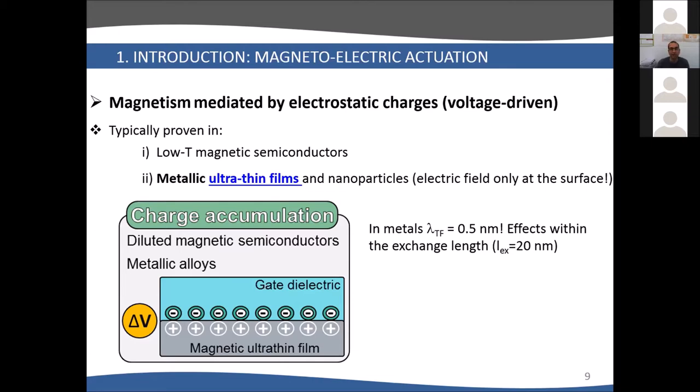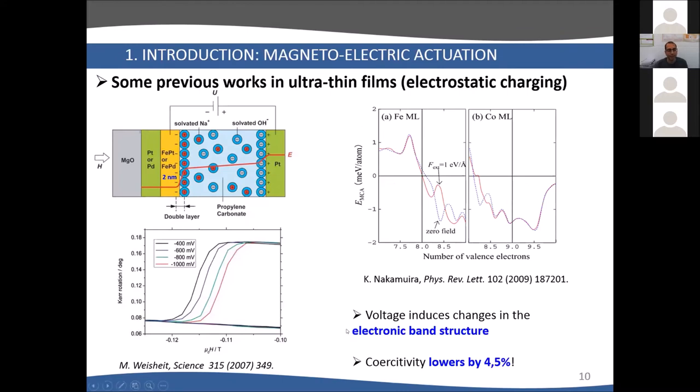You need to work in very thin metallic layers. This was done in the seminal work by Professor Givort in 2007, in which they immersed a very thin layer of iron platinum or iron palladium in propylene carbonate with solvated ions in solution. By applying voltage, they could change the coercivity. Here you see part of the loop zoomed around the coercivity. The change seems very large, but it was only 4.5 percent, a very limited effect. The explanation was that when you apply voltage, you can change the magnetocrystalline anisotropy energy, and because of this the coercivity changes.